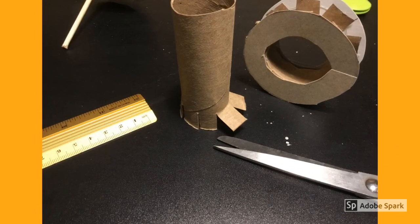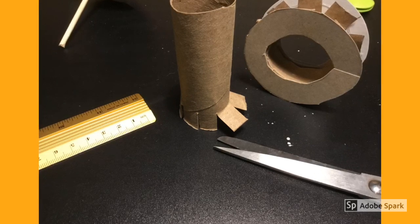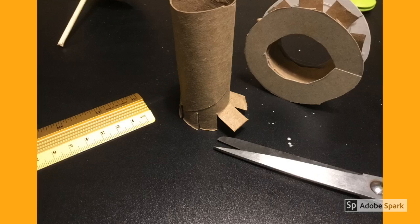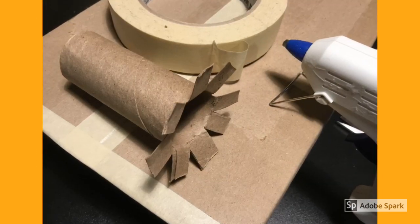In the modified 10 centimeter cylinder, make small 1 to 1.5 centimeter cuts that are evenly dispersed at one end. Fold out the tabs on the modified cylinder so you have another flange connection.